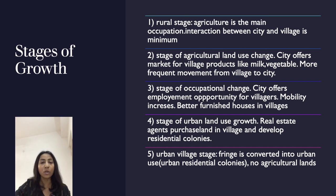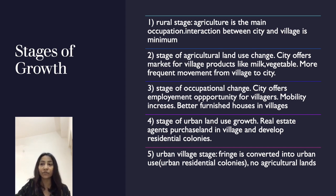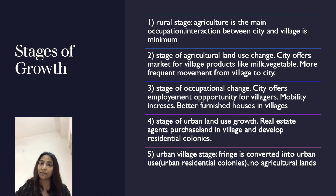Based on these three aspects — physical, economic, and social — we can define the stages of rural-urban fringe growth. In the first stage, the rural stage, agriculture is the main occupation in the rural area and because of that there is very little interaction between the city and the village.